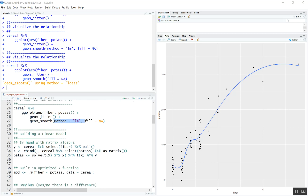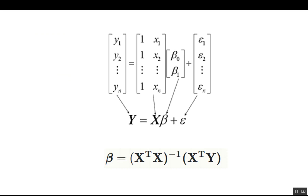Let's start by building a linear model. These are the equations for matrix algebra for regression. Y is what we're trying to predict — the outcome — so in this case we're trying to predict fiber, a vector of fiber outputs Y1 through Yn for each cereal. Next we have the design matrix X, which starts with a column of ones as a constant to give you the Y intercept, and then your X terms. For every predictor in the model you will have a column — in simple regression, just one column of potassium values.